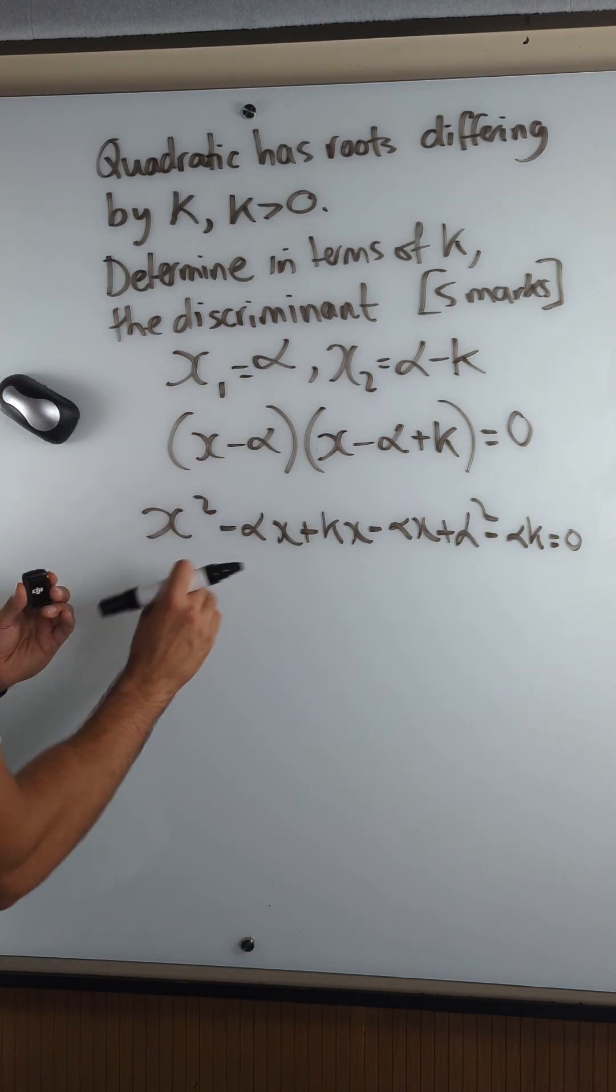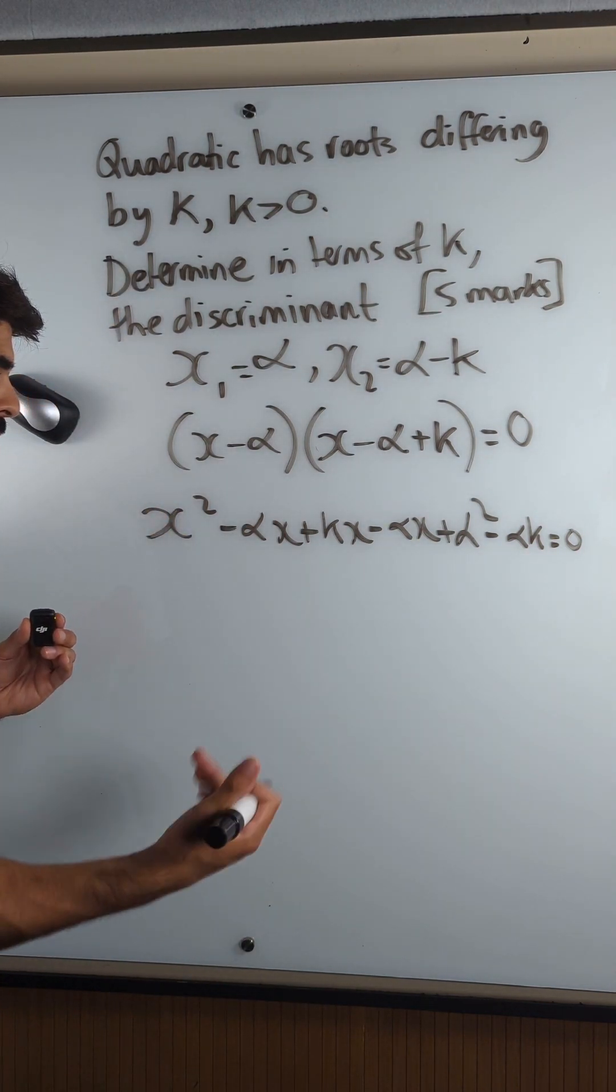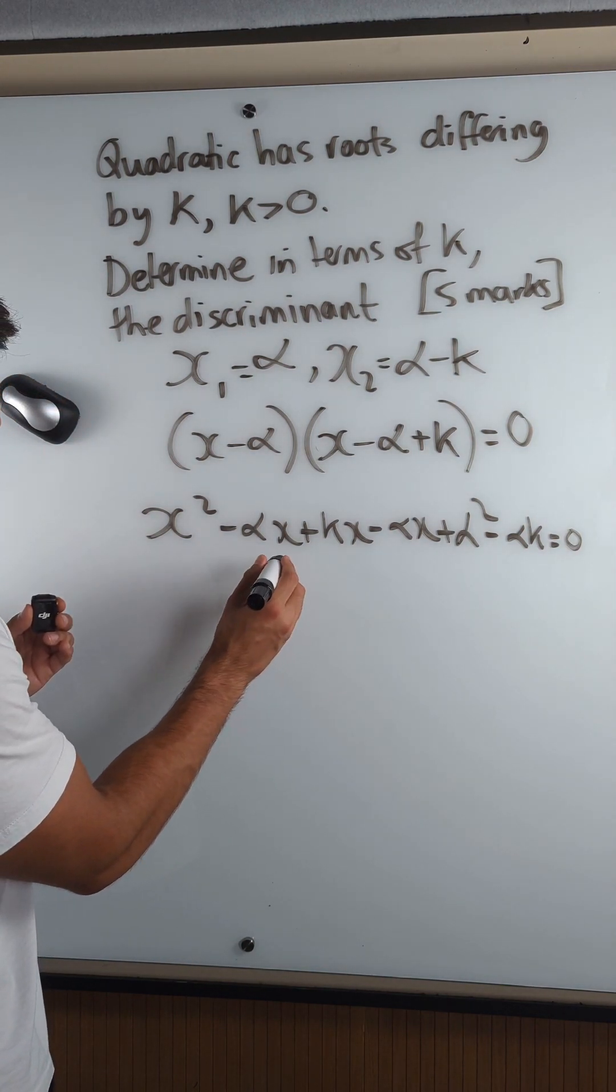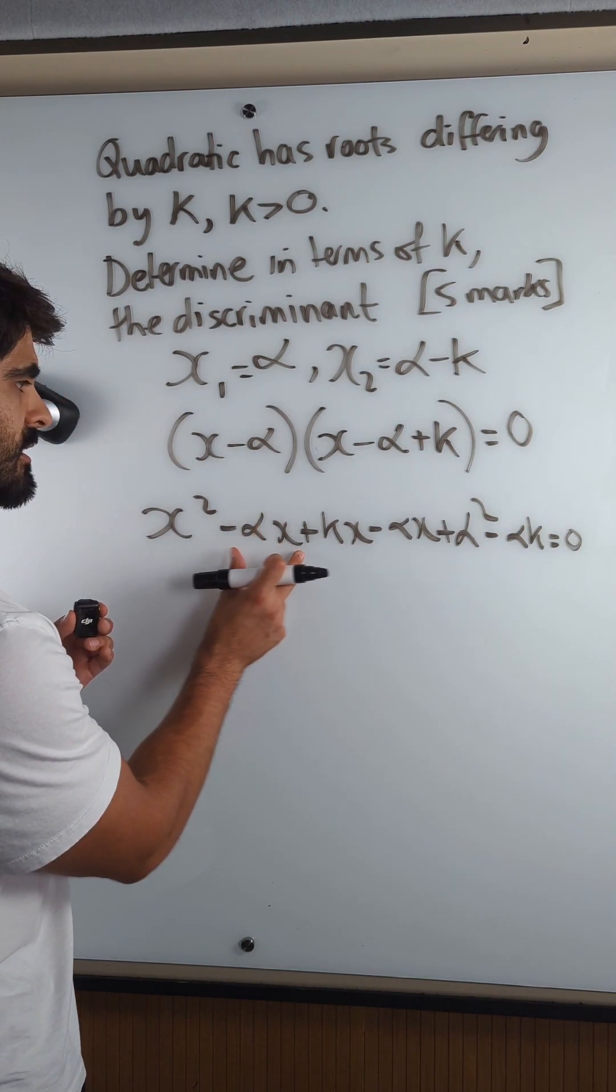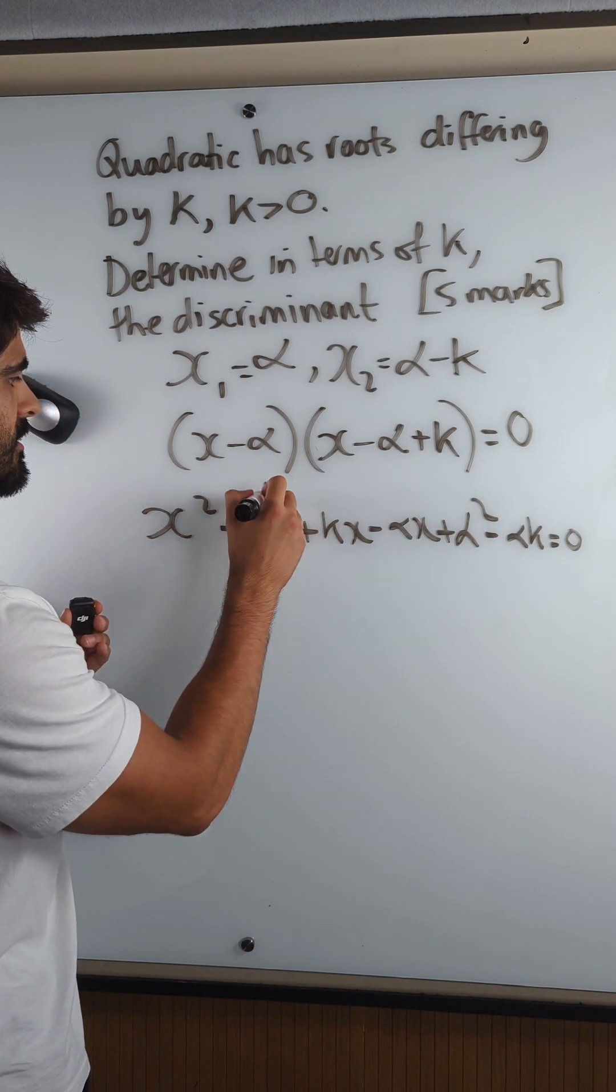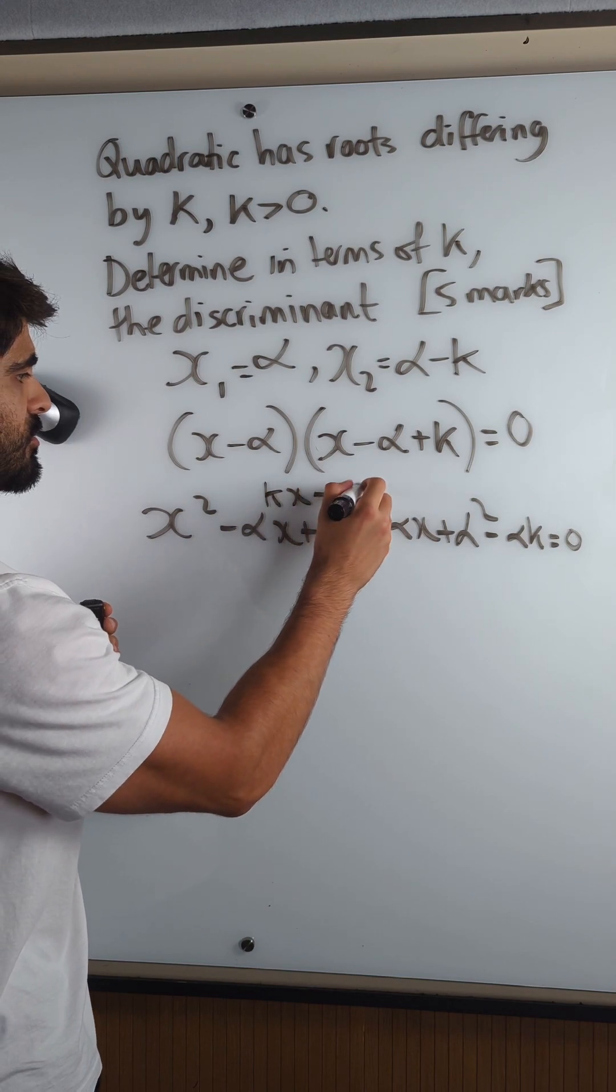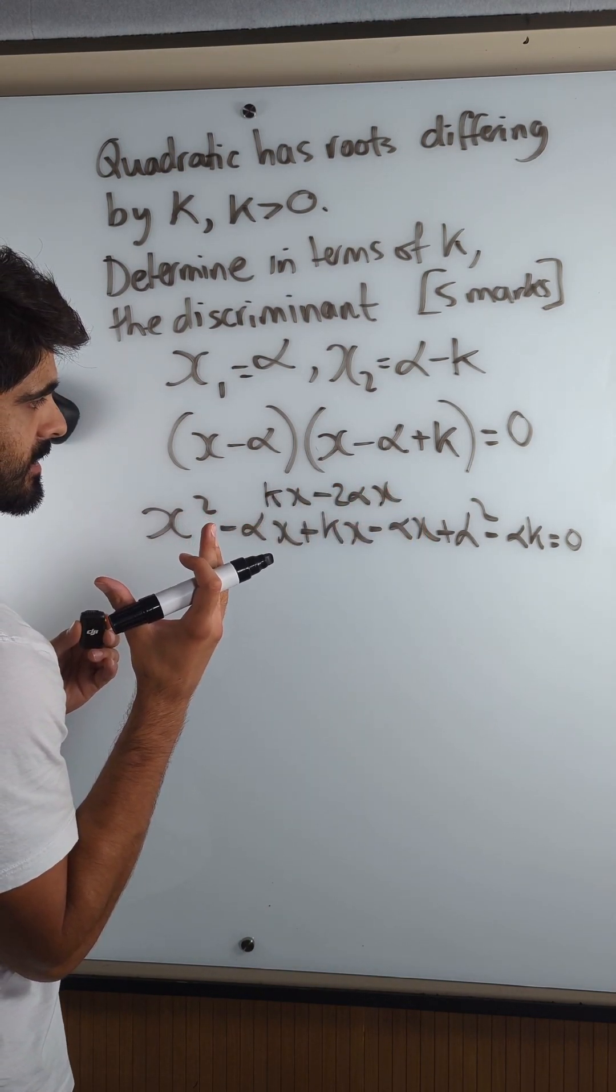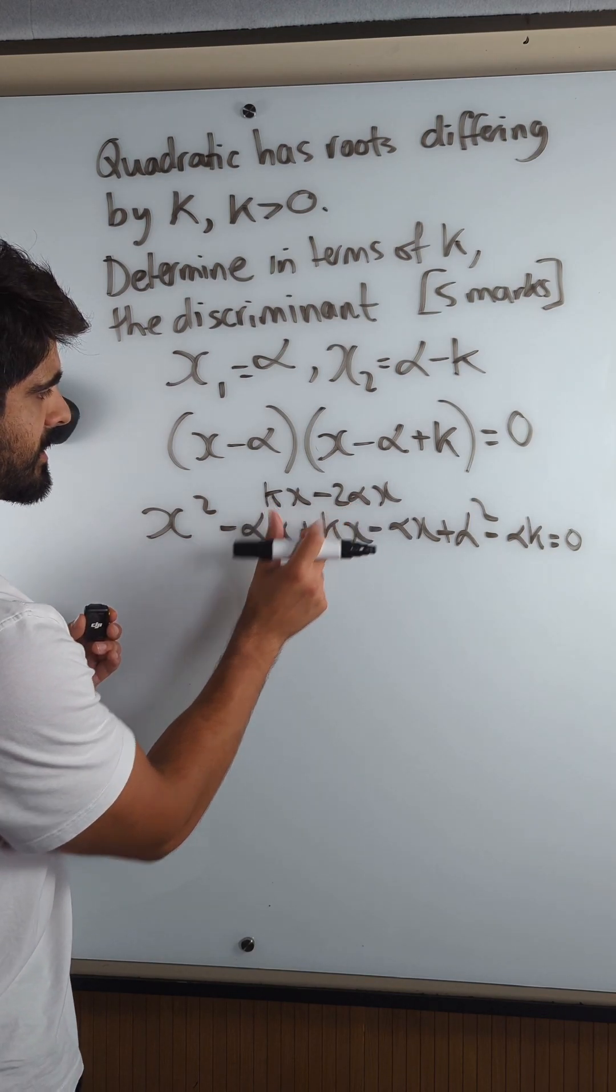So they just want the discriminant, right? So this is my quadratic discriminant, b squared minus 4ac. Okay, so b squared, what's my b term? Well this and this make up minus 2 alpha x, right? So you have kx minus 2 alpha x. So the b value is k minus 2 alpha.